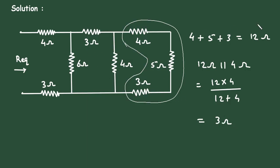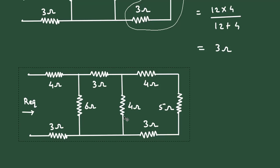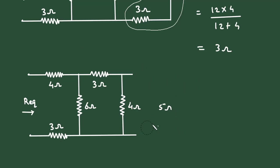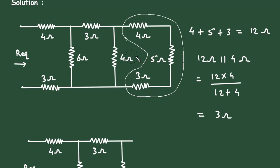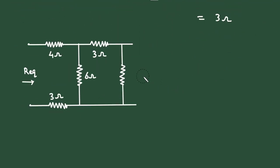Again, if we redraw the circuit, we can replace this much part. The 12 ohm parallel with 4 ohm becomes 3 ohm. Therefore, this resistance will become 3 ohm.